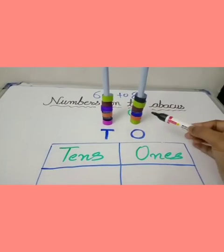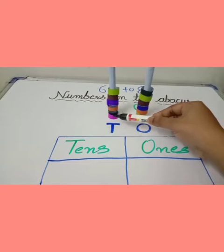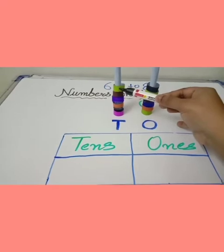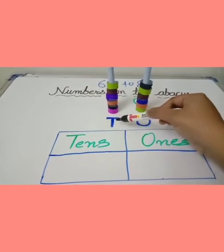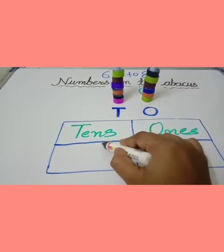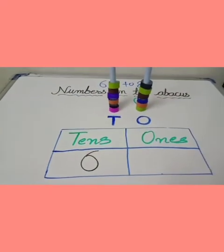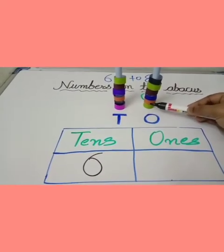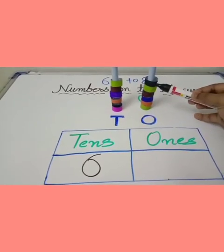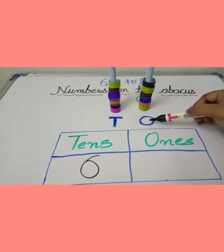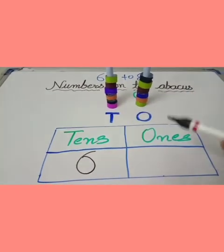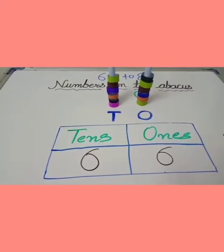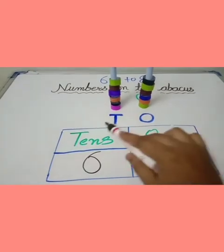Let's count again. On the tens place: 1, 2, 3, 4, 5, 6 — 6 on the tens place, so write down 6. Now count the ones place: 1, 2, 3, 4, 5, 6 — 6 on the ones place, so write down 6. We get the number 66 on the abacus tool.